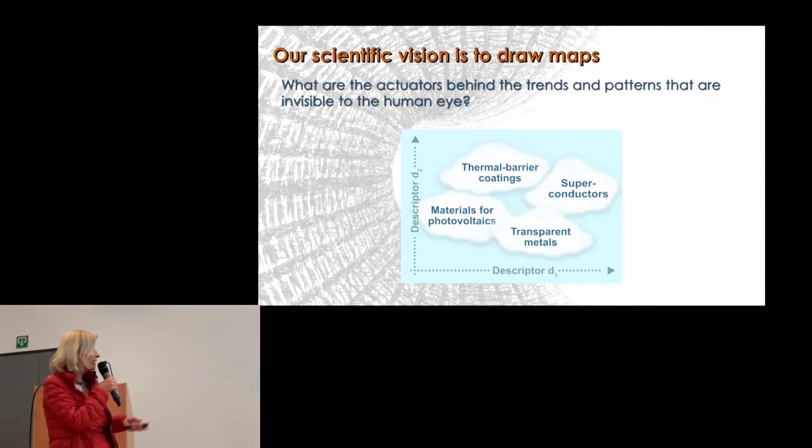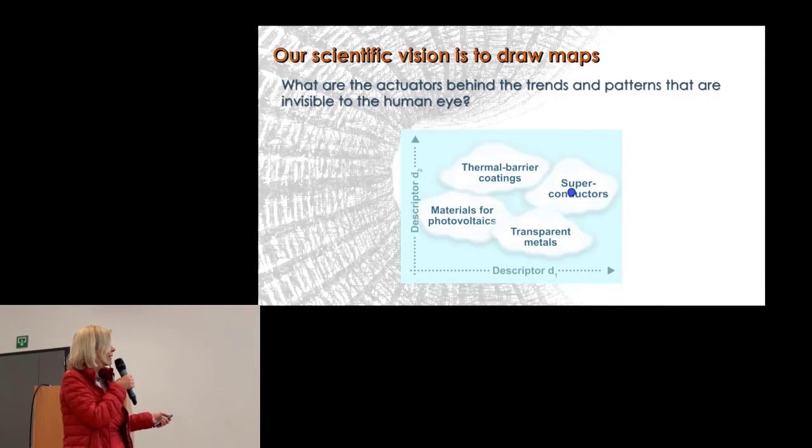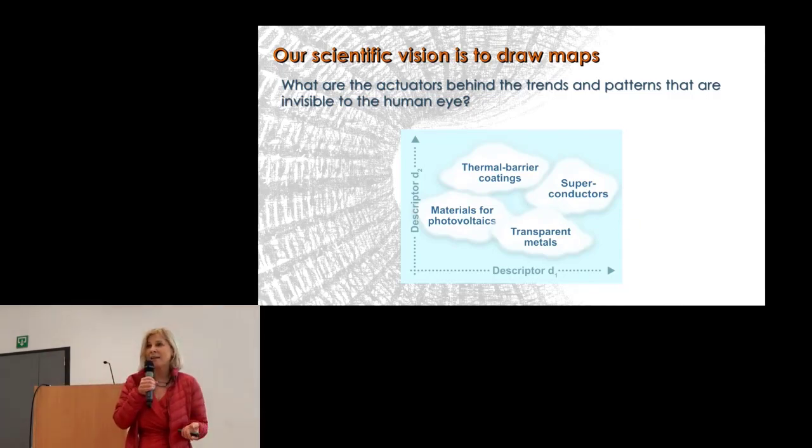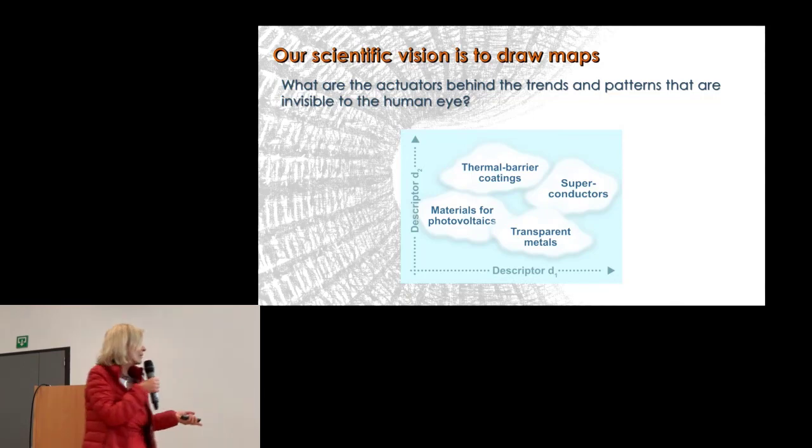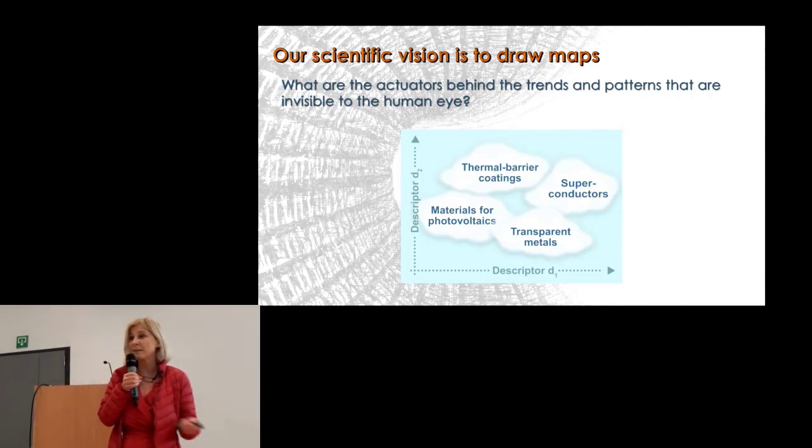For instance, where can I find superconductors, or transparent materials? The requisite for this is having a lot of data. The question will be how multi-dimensional these maps will be. They will certainly not be two-dimensional, but at some point I think it should be possible.